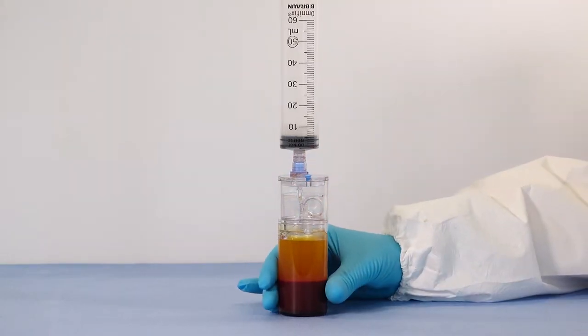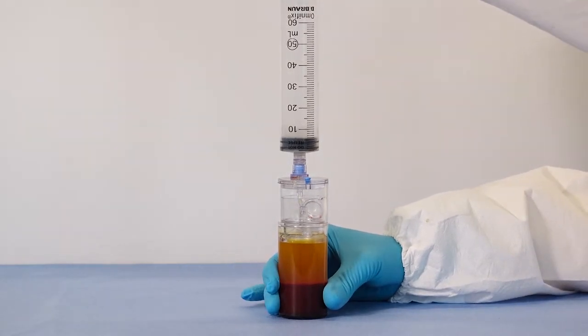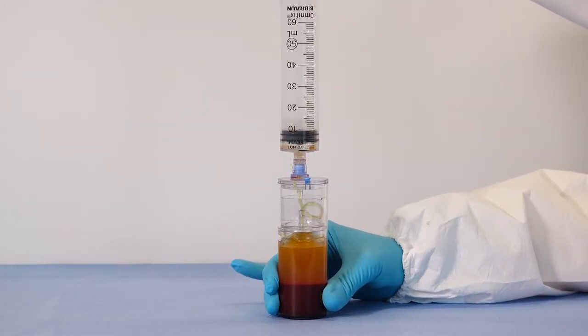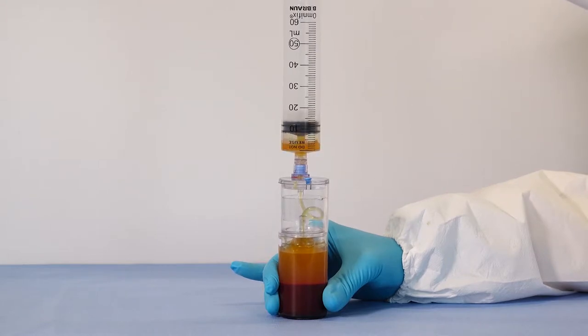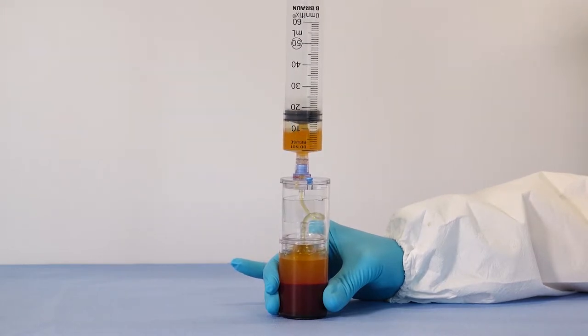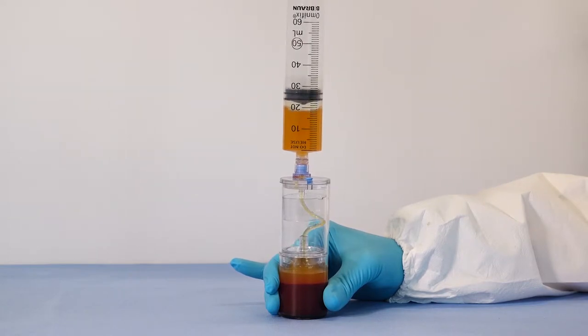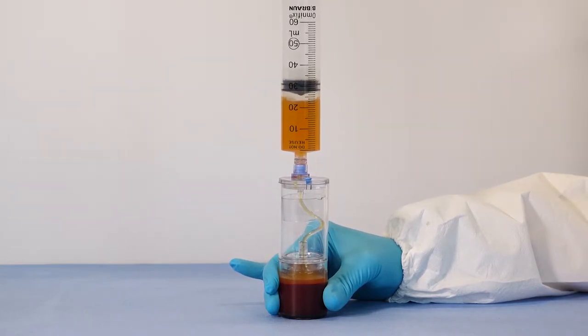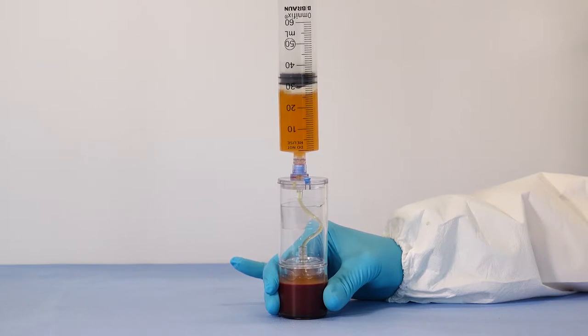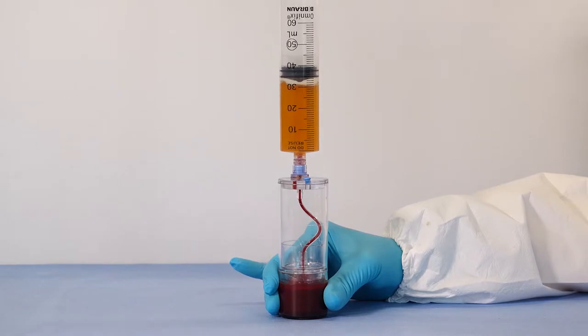Attach a sterile syringe to the top port and aspirate the Platelet Plasma Suspension. Aspirate until red blood cells fill the aspirating pipe.